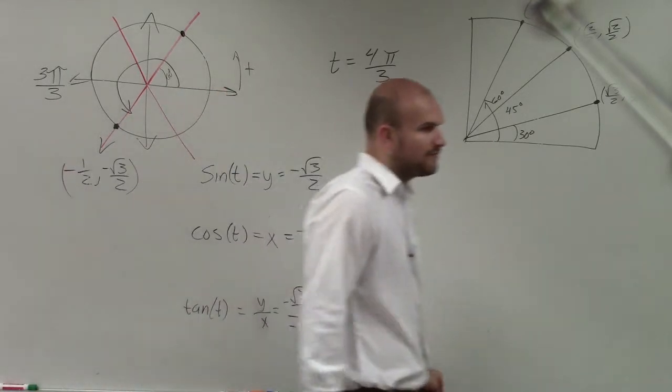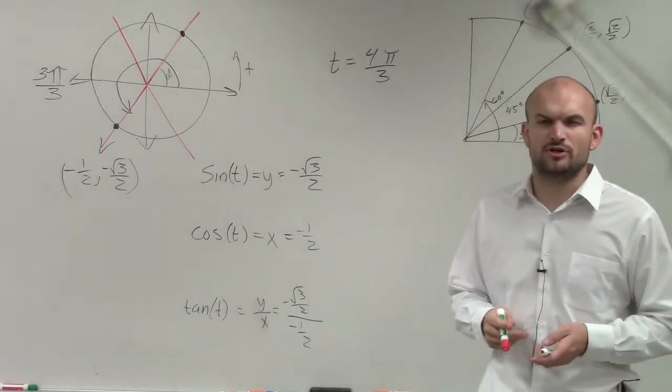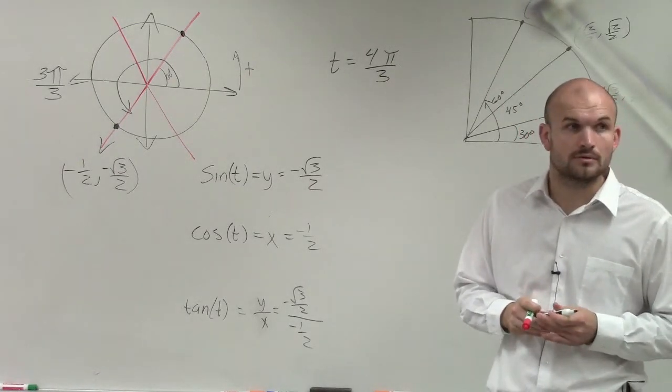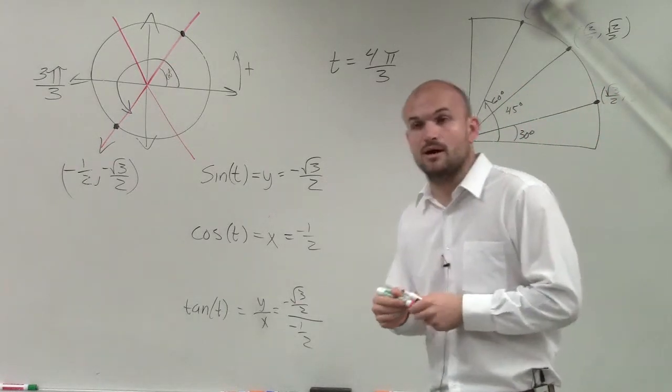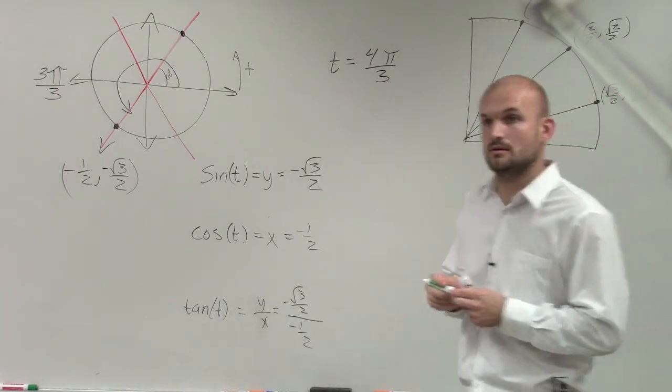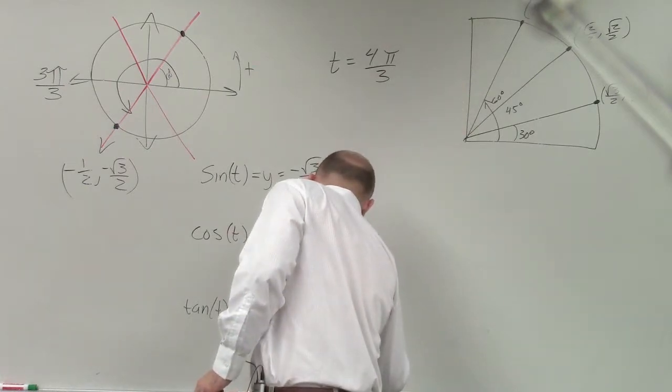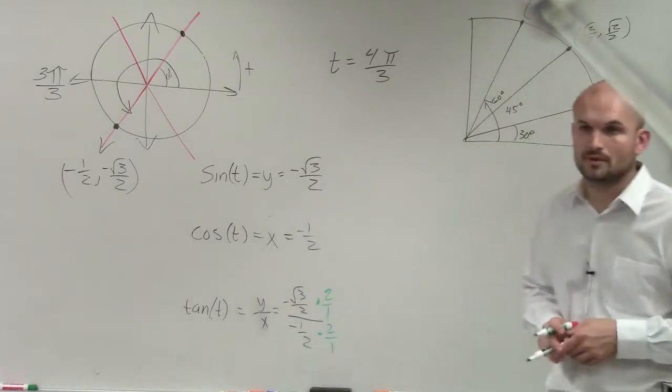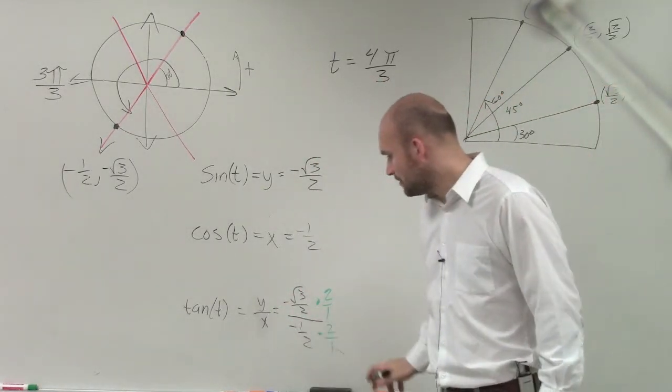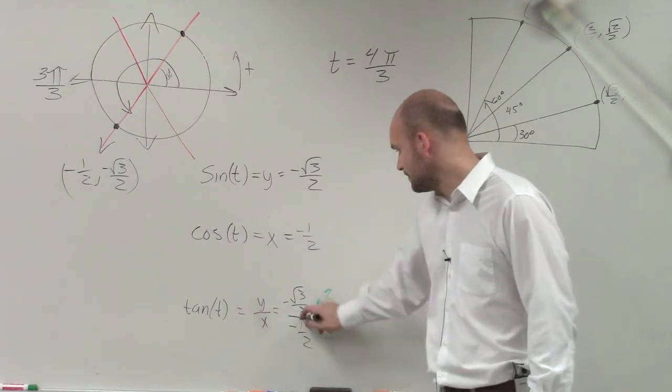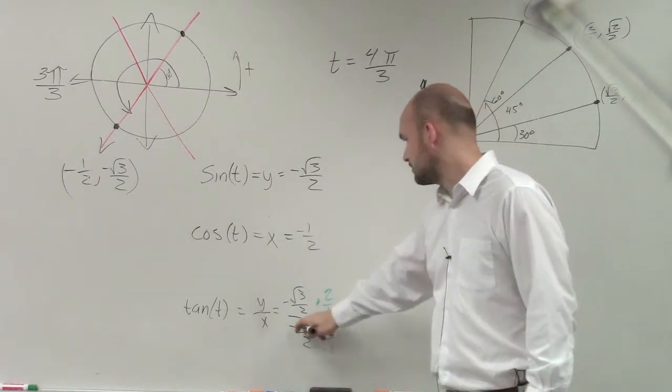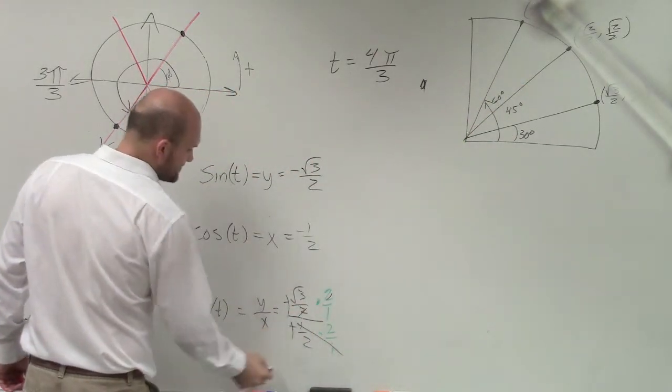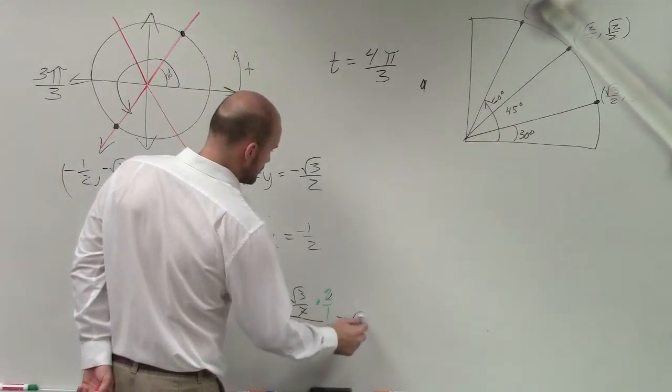Now remember, ladies and gentlemen, when you have a fraction divided by a fraction, you multiply it by its reciprocal. So I multiply by its reciprocal. That goes to 1, and then these 2s divide out to 1. The negatives go to positive, and I'm just left with the √3.